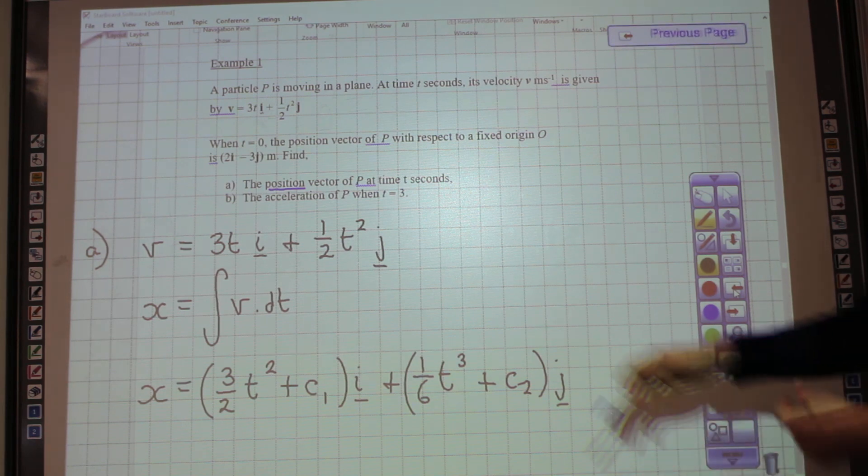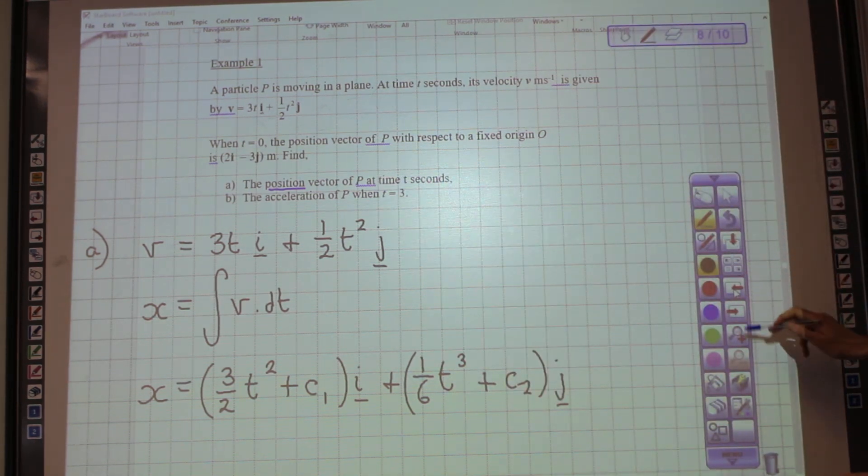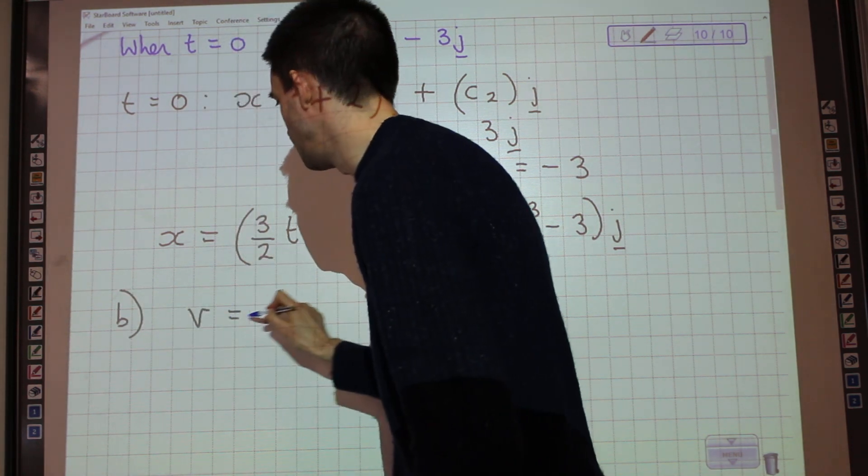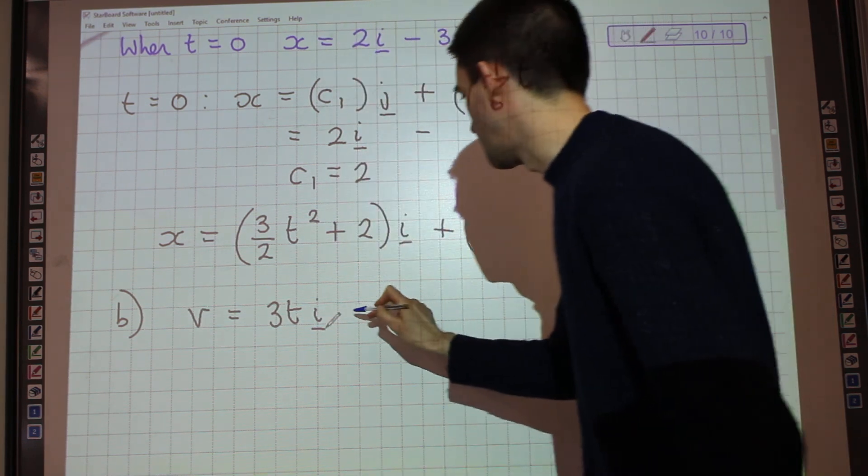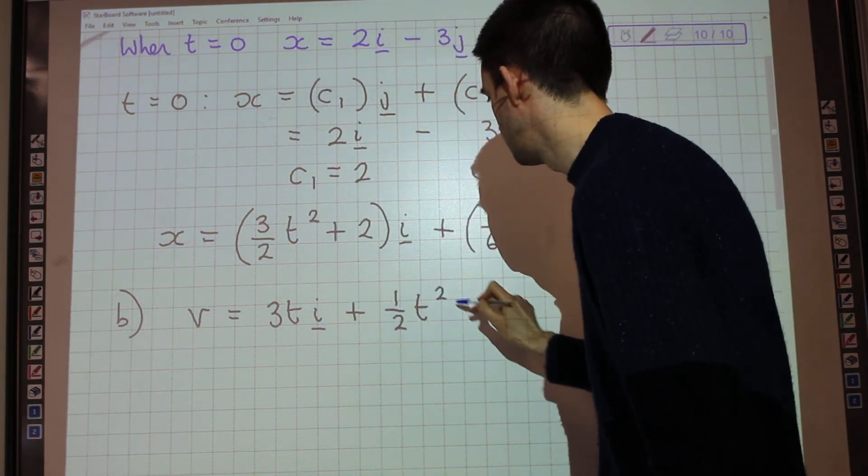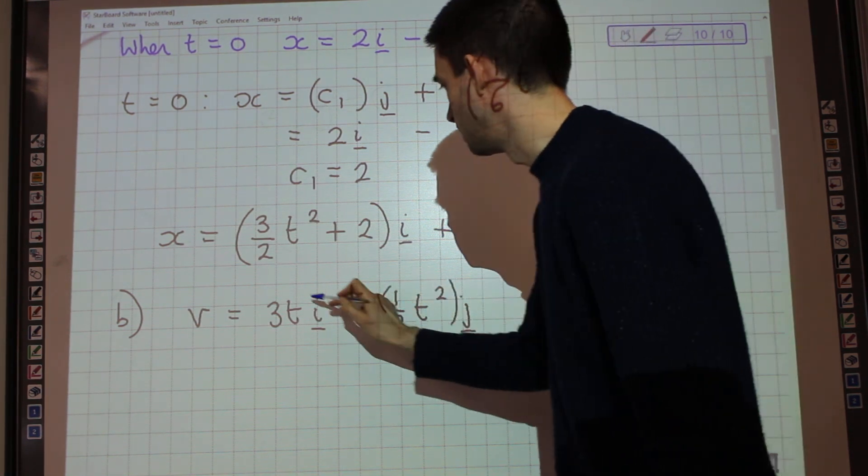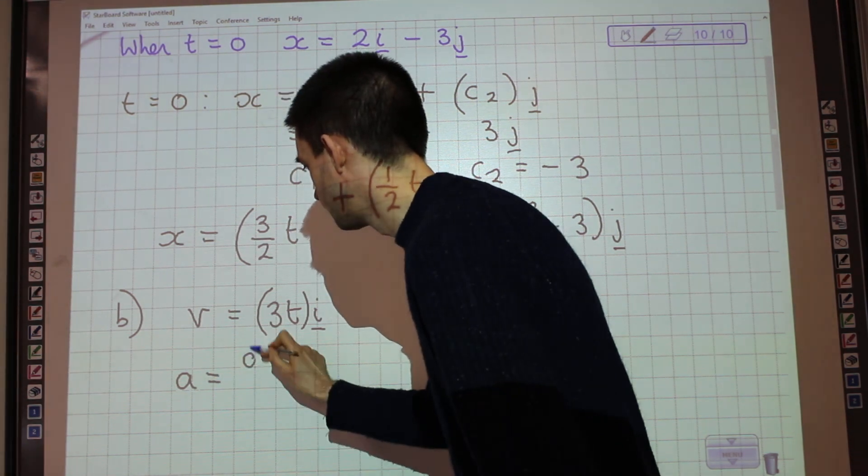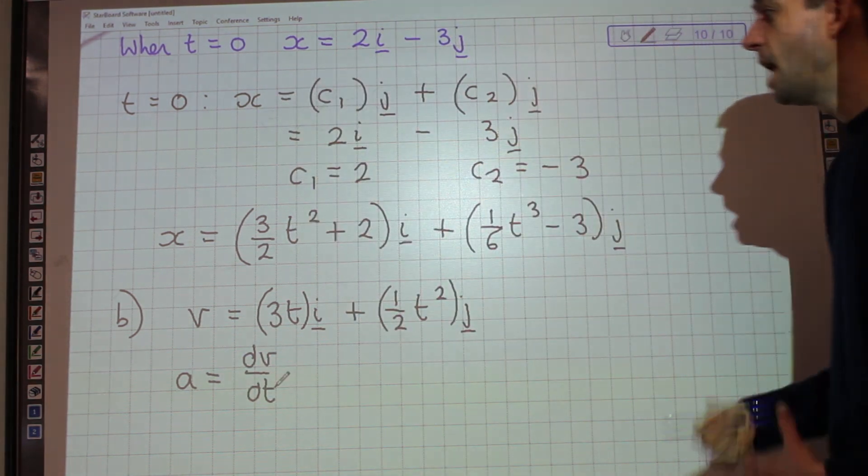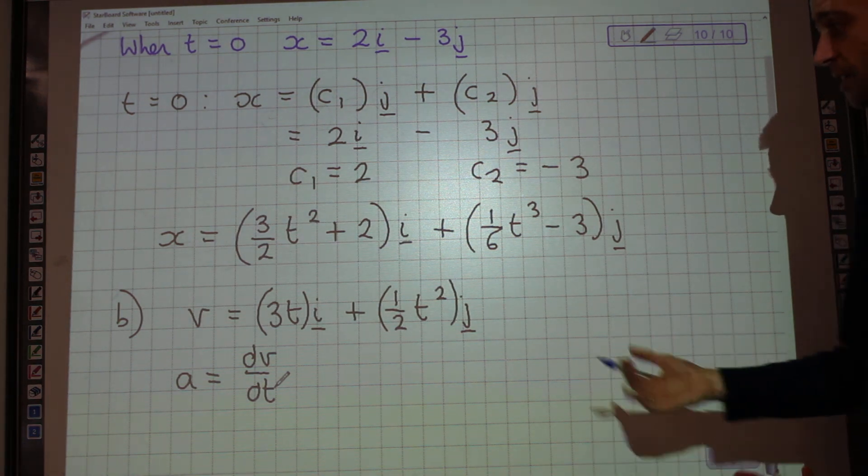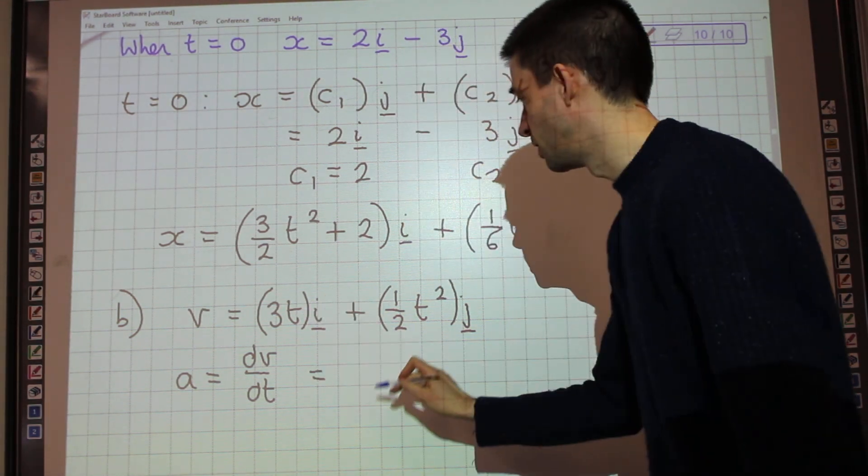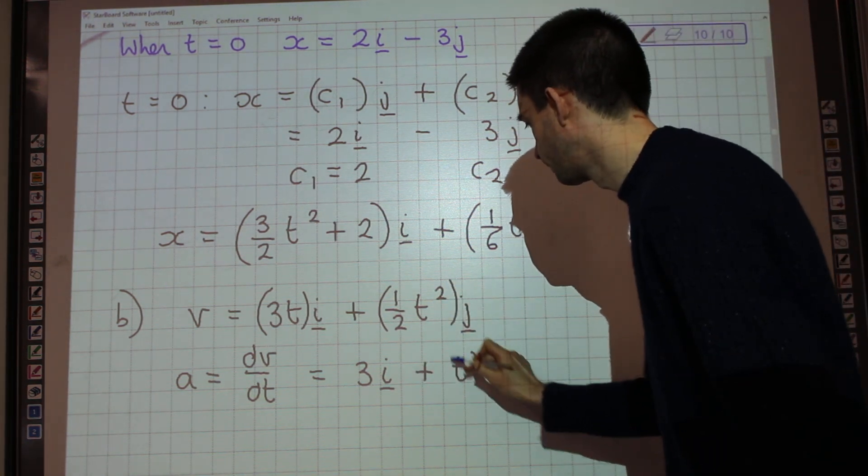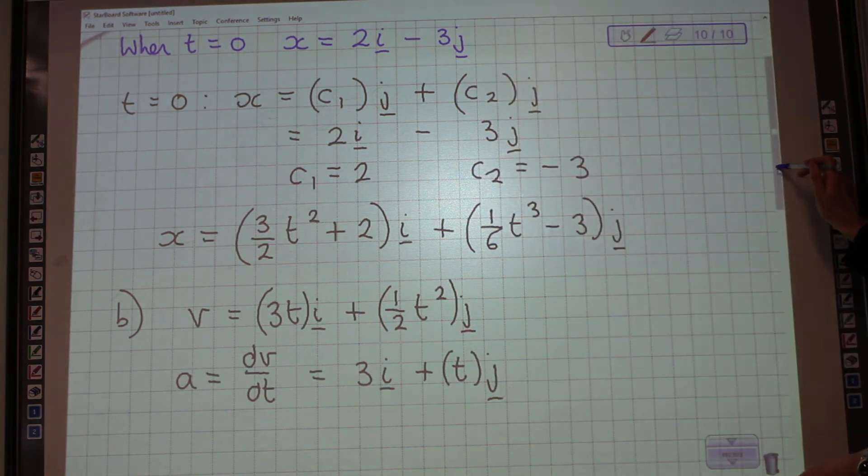Right, moving on to part b then. Part b is asking for the acceleration of p when t equals 3. So I'm just going to go back to my original expression for velocity, which was that v equals 3ti plus 1 half t squared j. Generally you tend to put brackets around the bits with t's in. Now, acceleration is the rate of change of velocity, so differentiate v with respect to time. And again, we can do it separately for the i components and the j components. So what we would have here, if we differentiate the i component, we're just going to get 3i. And if we differentiate the j component, we're just going to get tj.